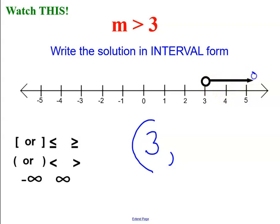Now, what is the largest value? Well, it's an arrow, which means it's pointing towards infinity. And if you remember what I said, infinity is not a number, and it always gets a parentheses. This is the interval notation for this inequality or this graph.